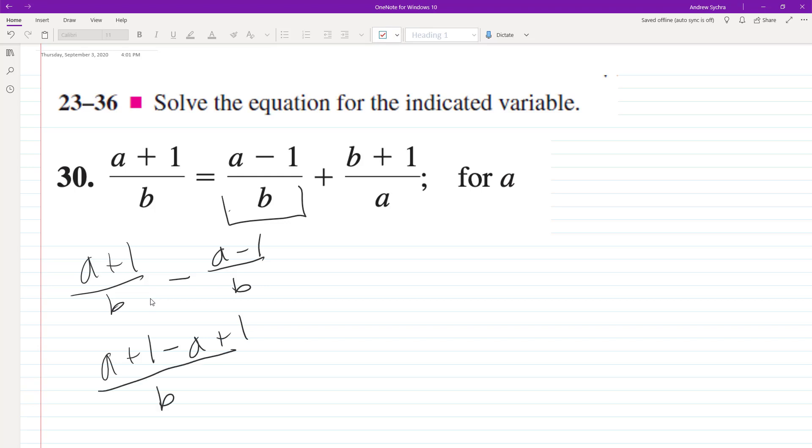The a's cancel out and we're left with 2 over B, which is equal to b plus 1 over a.